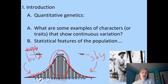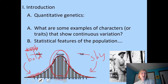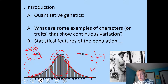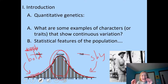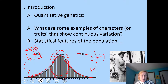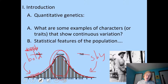These traits — when you've got something that shows continuous variation — are typically determined by many genes or many loci. They have polygenic inheritance. Each gene or allele is contributing a tiny bit to the character or trait of height or of boldness versus shyness. And the environment is going to play a role as well.